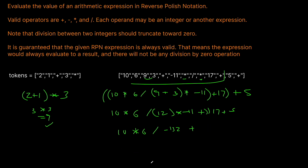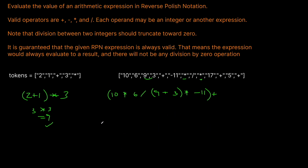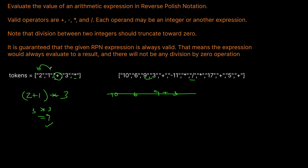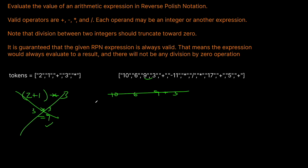So how do we actually want to solve this? You can see that we are constantly looking backwards when we get an operation. What we want to do is use a stack. If we see a number — basically anything that's not plus, minus, multiplication, or division — we add it to the stack as an integer. If we see a mathematical operator, we take the last two numbers from our stack, perform the operation, and push the result back.